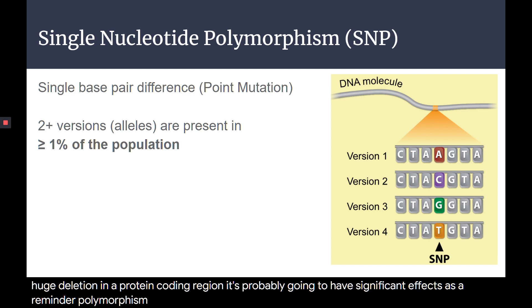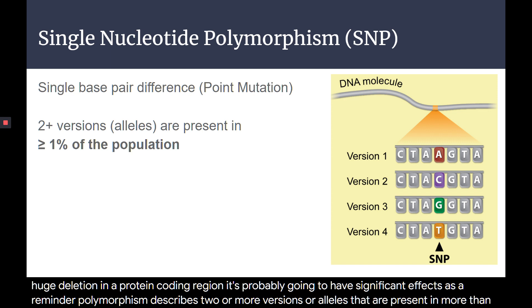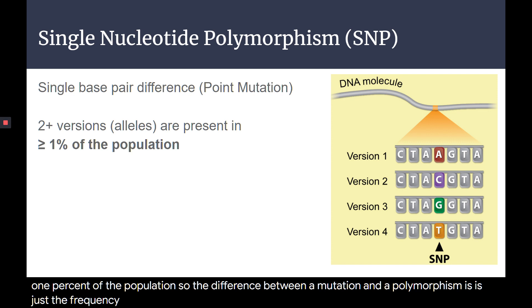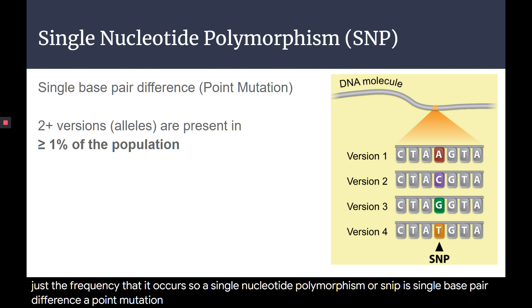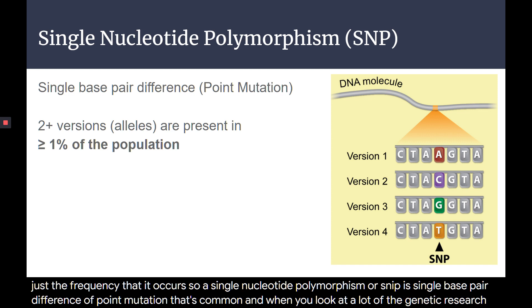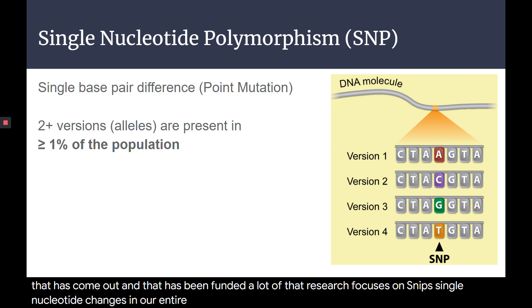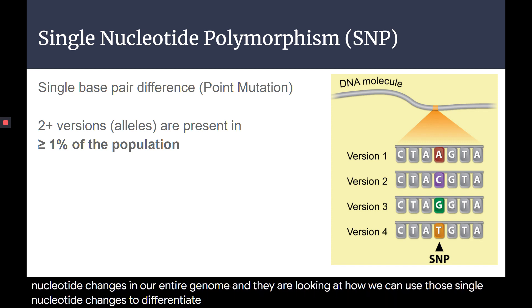As a reminder, polymorphism describes two or more versions or alleles that are present in more than 1% of the population. The difference between a mutation and a polymorphism is just the frequency that it occurs. So a single nucleotide polymorphism, or SNP, is a single base pair difference — a point mutation. That's common. And a lot of the genetic research that has come out and been funded focuses on SNPs.